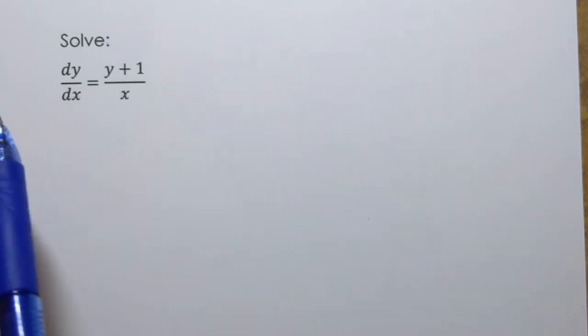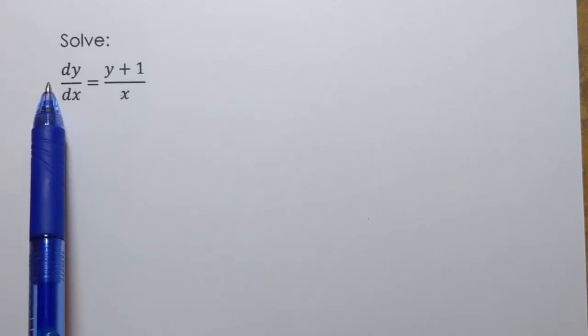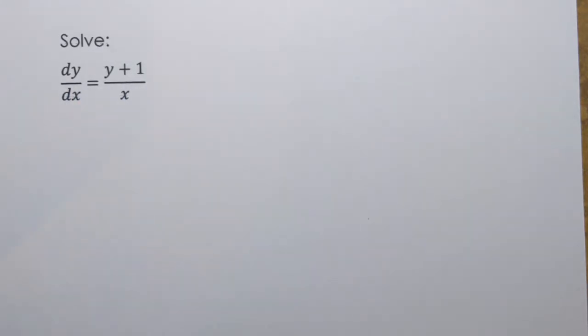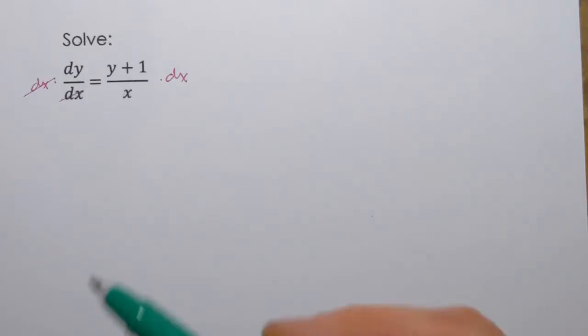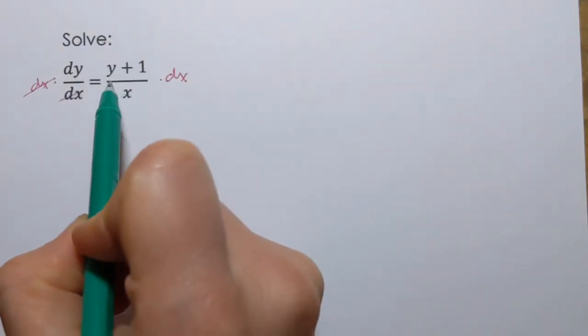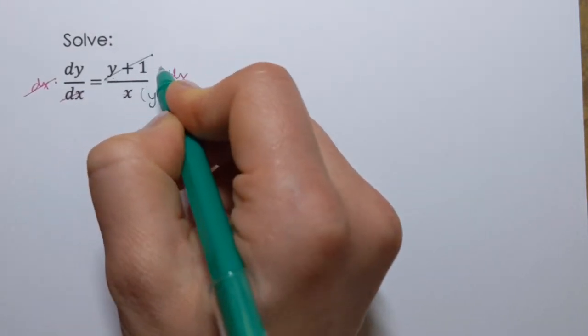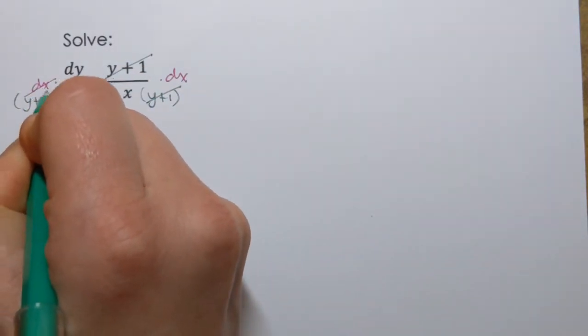In other words we want to collect variables y on one side and variables x on the other side of the equation. Now in this case I'm going to start by multiplying both sides by dx so that dx appears on the right hand side, and at the same time I will divide by (y+1) on both sides so that y appears on the left side.